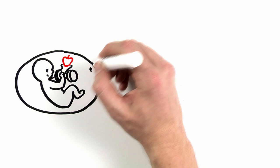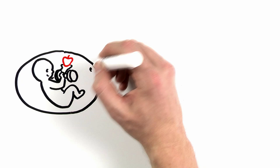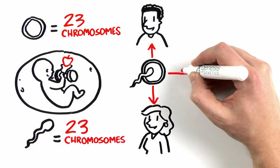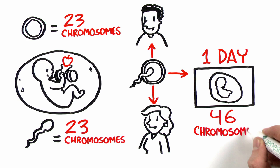A healthy pregnancy begins with a healthy embryo. One egg has 23 chromosomes, so does one sperm. A fertilized egg contains half of mom's DNA and half of dad's. One day after fertilization, a healthy embryo begins to form with 46 chromosomes.